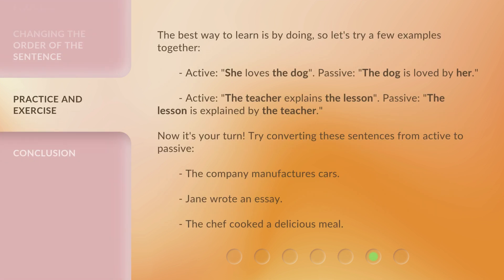The best way to learn is by doing, so let's try a few examples together. Active: 'She loves the dog.' Passive: 'The dog is loved by her.' Active: 'The teacher explains the lesson.' Passive: 'The lesson is explained by the teacher.'